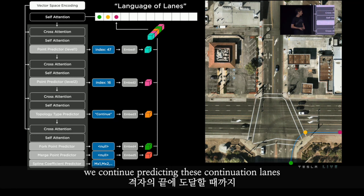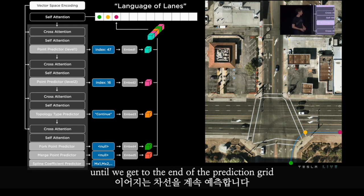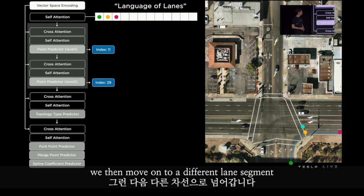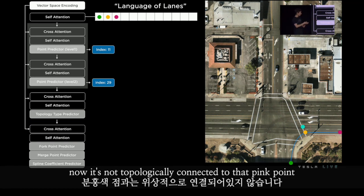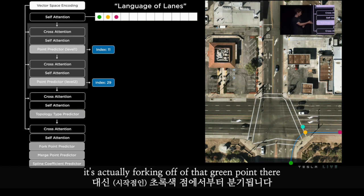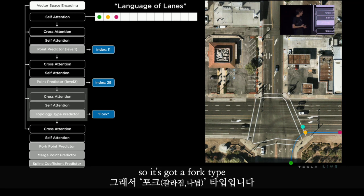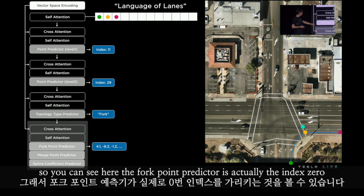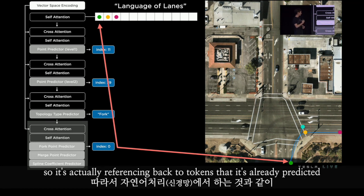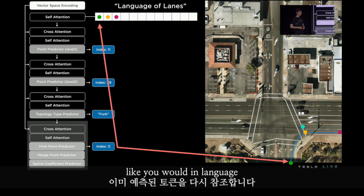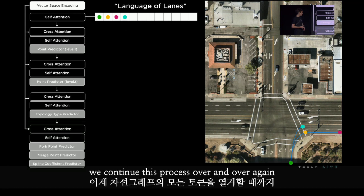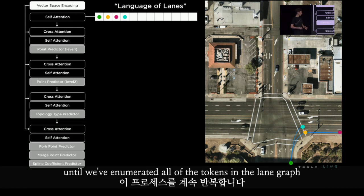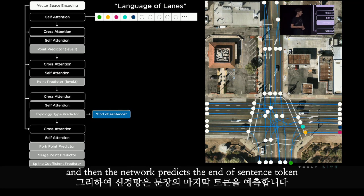We continue predicting these continuation lanes until we get to the end of the prediction grid, then move on to a different lane segment. The cyan dot is not topologically connected to the pink point — it's actually forking off of the green point, so it has a fork type. Fork tokens point back to previous tokens from which the fork originates, referencing back to already-predicted tokens like you would in language. We continue this process until all tokens in the lane graph are enumerated, and then the network predicts the end-of-sentence token.